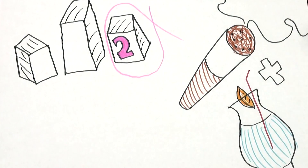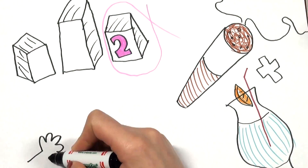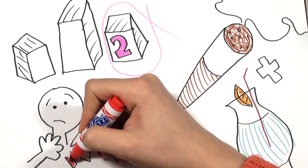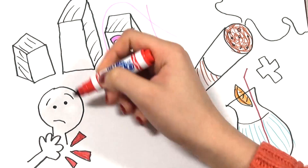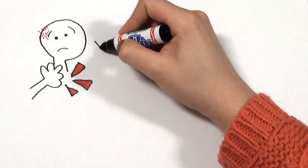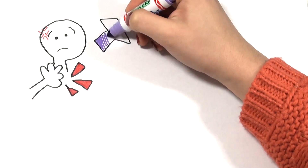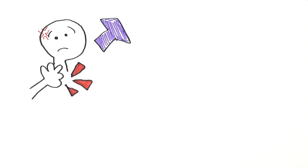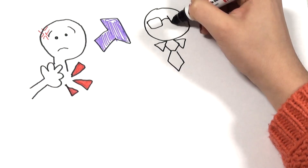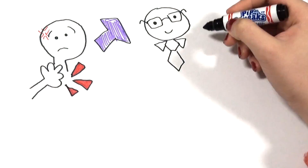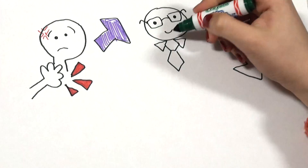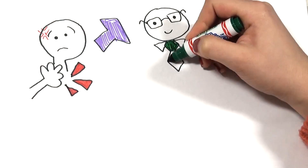It commonly presents with symptoms such as hoarseness, pain, change in voice, or dysphagia. Any smoker that visits their GP with hoarseness gets an urgent referral to ENT, meaning they will be seen within one to two weeks.